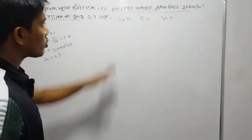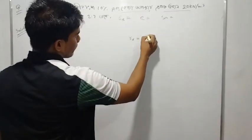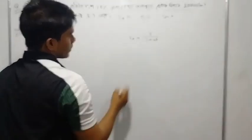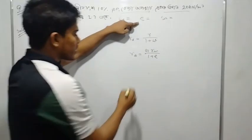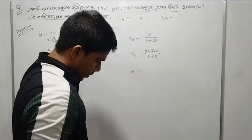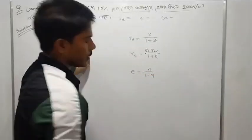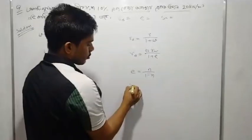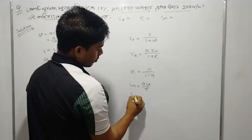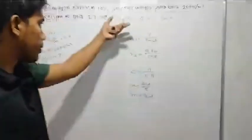Here is the formula. So gamma_d — we know gamma_d is equal to gamma divided by (1 plus omega). Also, gamma_d is equal to G times gamma_w divided by (1 plus e). And the formula for e is equal to — where e is equal to 1 divided by (1 minus n), where n is the porosity.